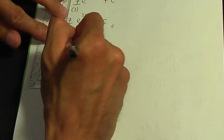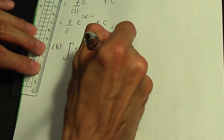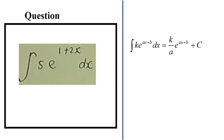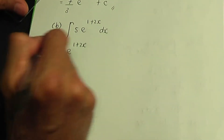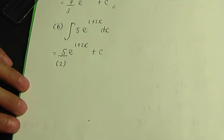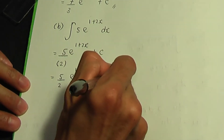Part b: integrate 5·e to the power 1 plus 2x with respect to x. Again, 5 is a constant and the power 1 plus 2x is of the form ax plus b, so we can use the related standard result. The answer is 5·e to the power 1 plus 2x, divided by the derivative of 1 plus 2x, which is 2, plus c. So the final answer is (5/2)·e to the power 1 plus 2x, plus c.